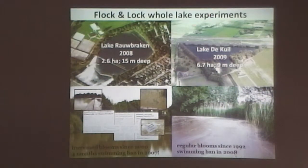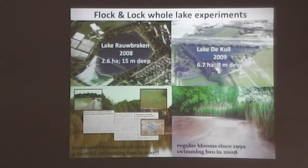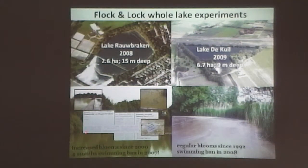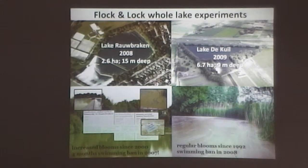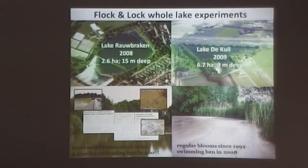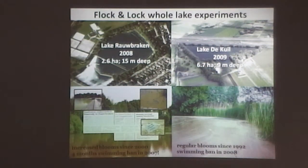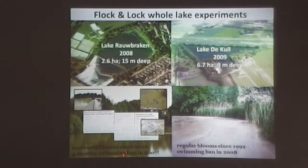Now we go to two whole-lake experiments: Lake Haugrack and Lake Thau. Both were suffering from cyanobacteria blooms, and these blooms were intensified. In Lake Haugrack in 2007, there was a full month swimming ban. There were facilities to sell there, and people had to pay an entrance fee with lifeguards to maintain the property — it's owned by the municipality. The cost for loss of income and for people that still needed to be paid their salary was 150,000 euros in that year for this small bathing site.